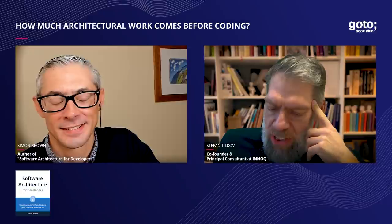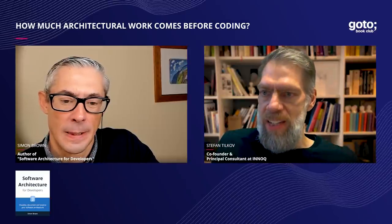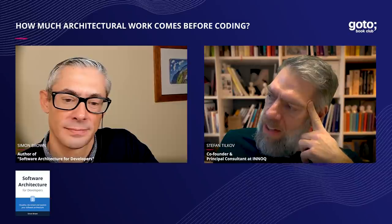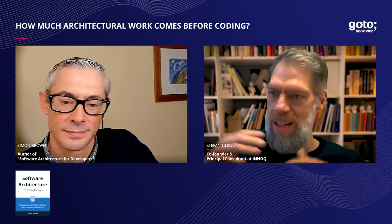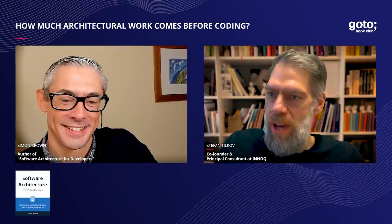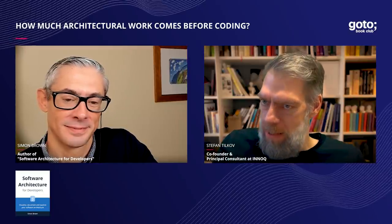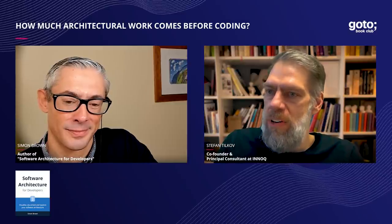You mentioned the Agile Manifesto as something that led some people, mistakenly, to dismiss all of the architectural ideas. I think some of the reasons for that were that architecture was very often associated with doing a lot of work up front — somebody designs the system, builds the architecture in the form of lots of diagrams, prose, and big documents, and then hands it off to somebody else to build it according to those guidelines. Pretty obviously that is not a good way to build things, but maybe the other extreme isn't that great either. So how much architectural work needs to be done before you actually start coding?